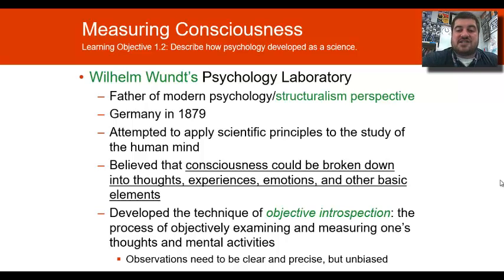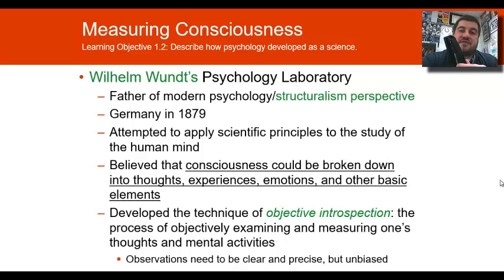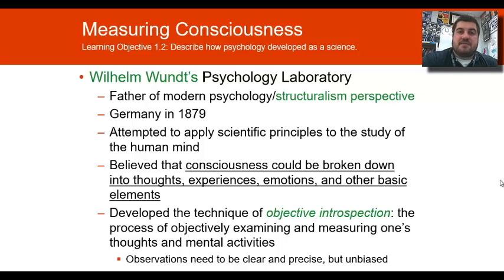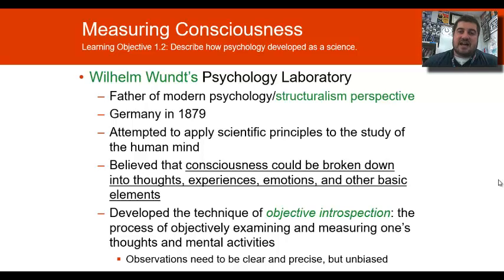Wundt believed we can break down our consciousness into subjective feelings and objective sensations. For example, looking at a stapler — we can all observe it's black, metal, shiny. But how does the stapler make us feel? Those are the subjective feelings. We get to this through objective introspection: using objectivity to examine and measure one's own thoughts and mental activities, being as unbiased as possible. Critics argue this is impossible because you cannot observe someone else's consciousness.